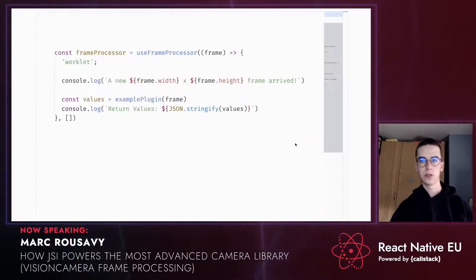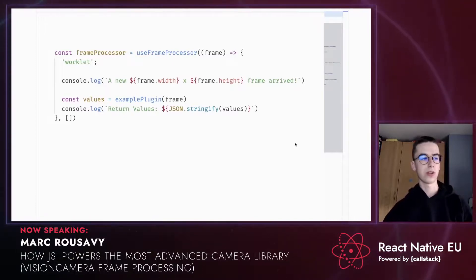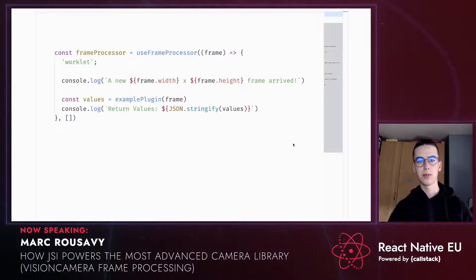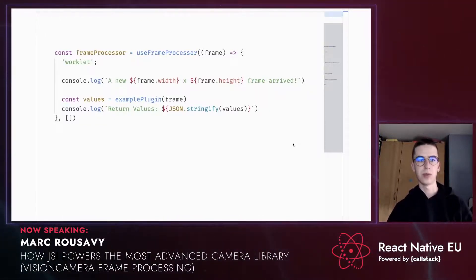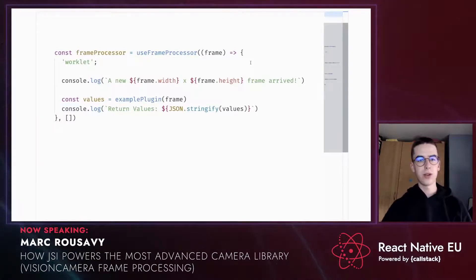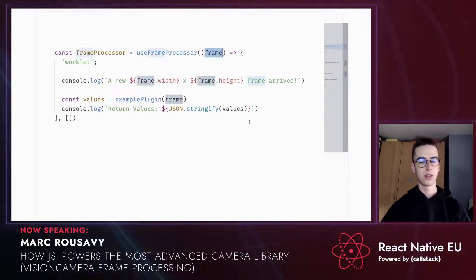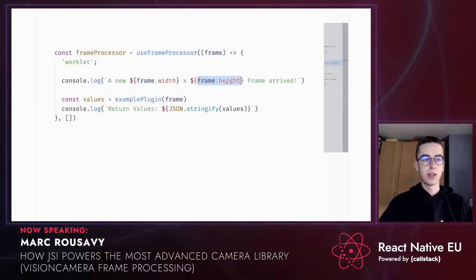Let's take another look at frame processors. Earlier we saw that we can directly access a frame's width and height properties, and even pass it to a native frame processor plugin — which by the way is a host function. How does this work? What exactly is the frame object? How does it contain a full 10-megabyte image from the camera? Isn't it really slow to copy frames from native to JavaScript for every frame, which can happen up to 240 times a second? Well, there's actually no copy or serialization happening here — the frame parameter is actually a JSI host object. This means the object has been created in C++, but JavaScript can also interact with it, similar to how host functions work.